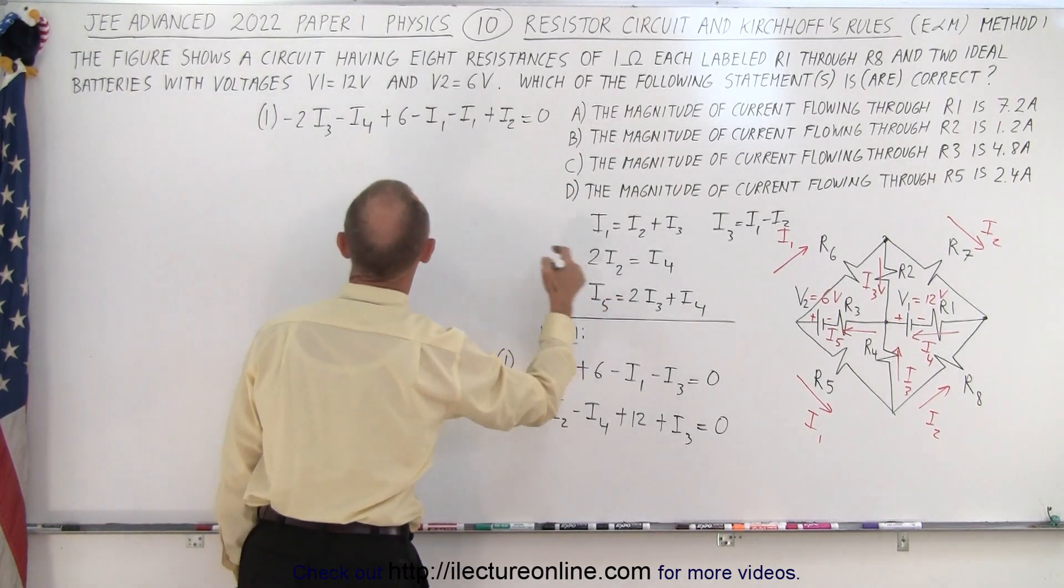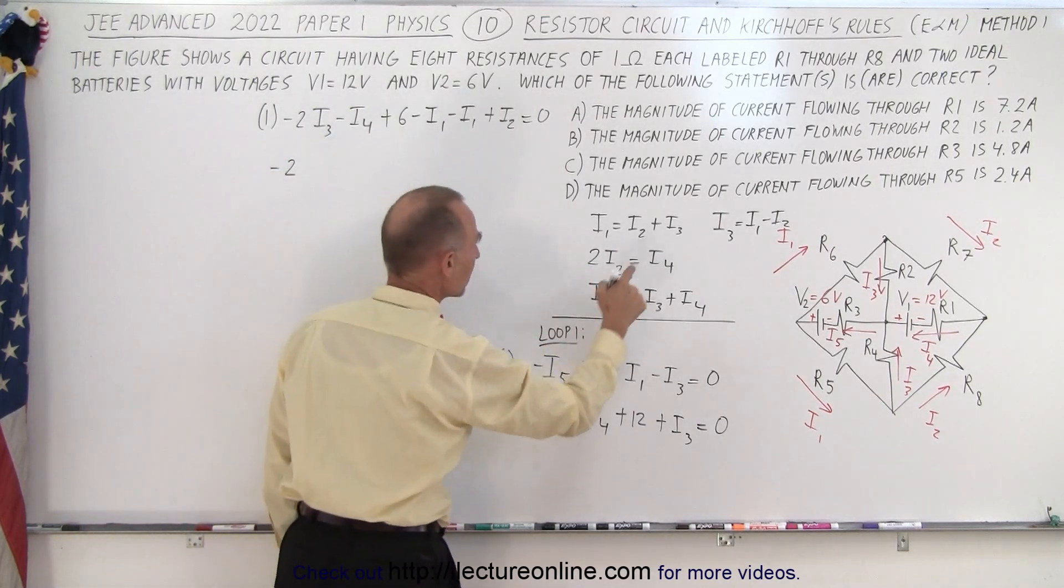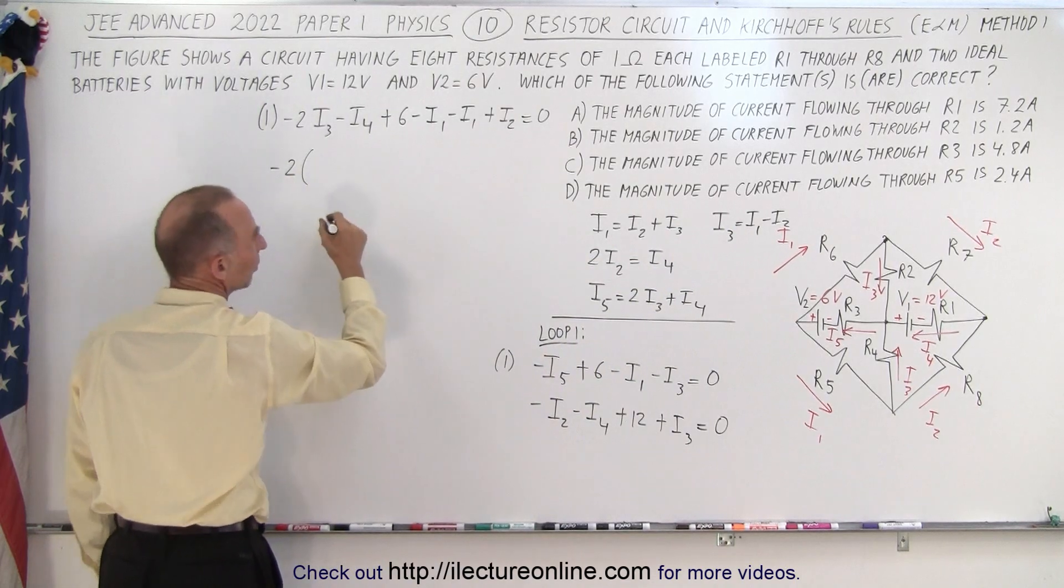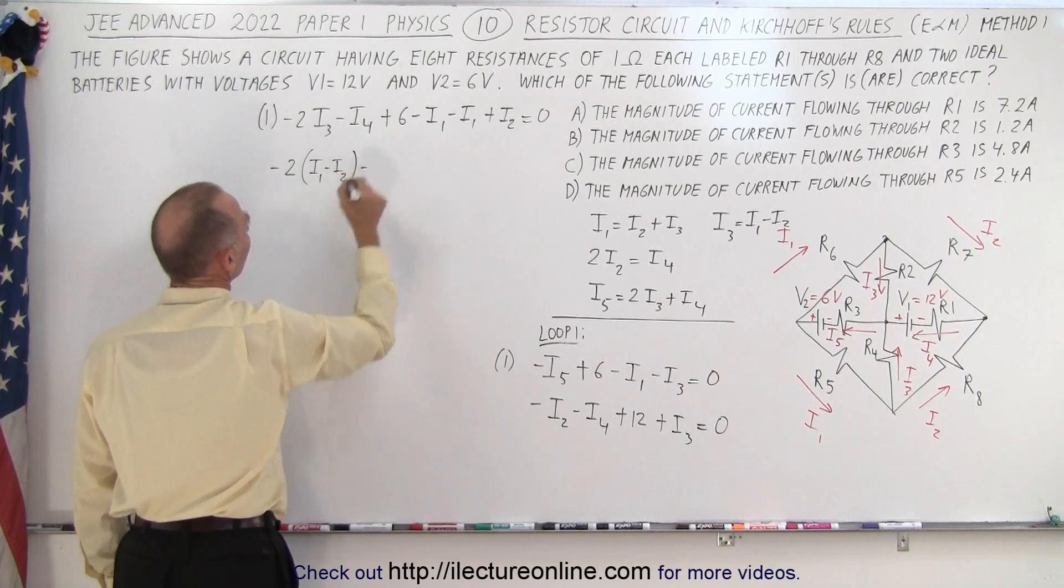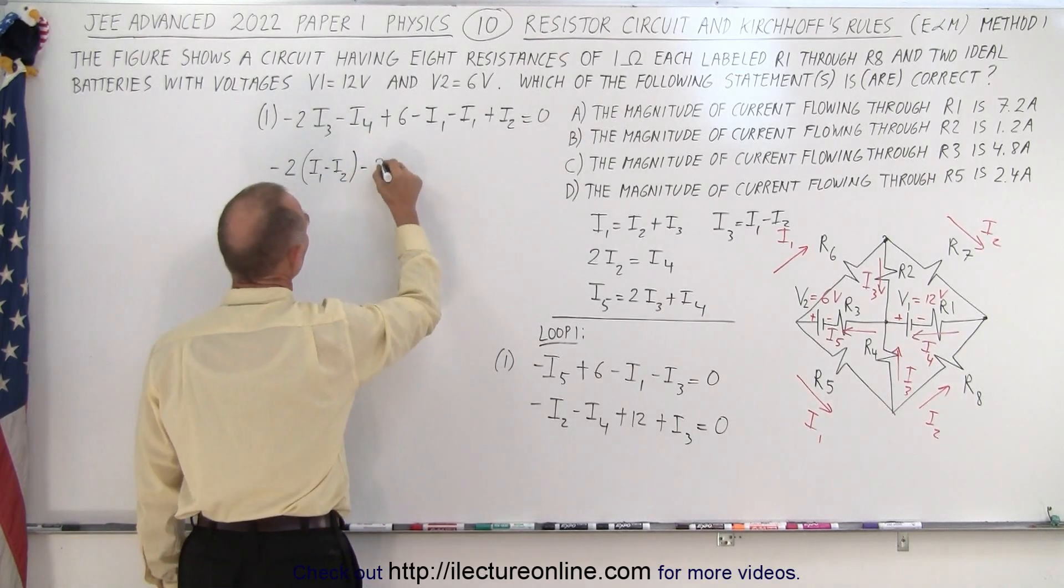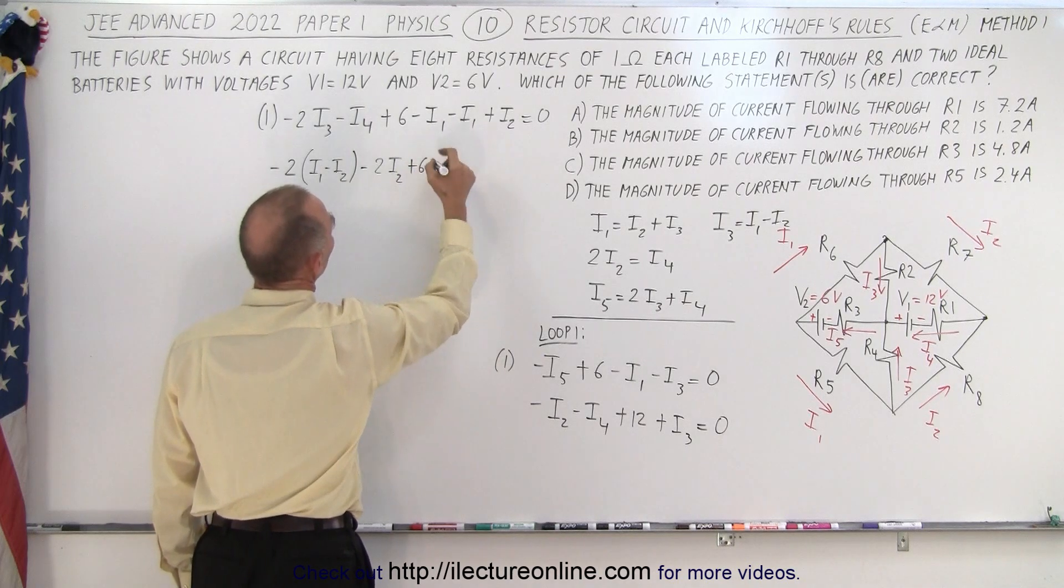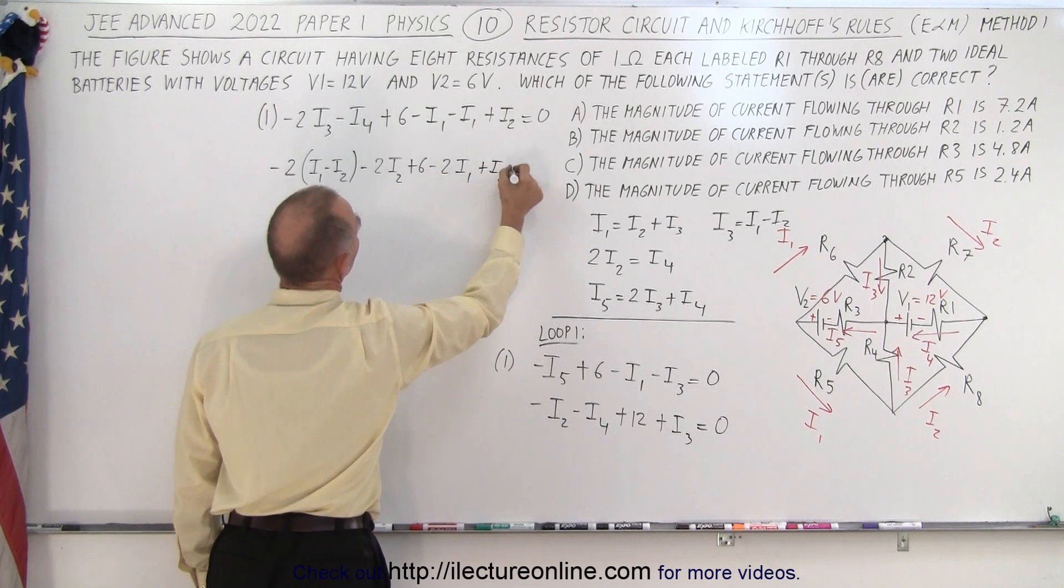I4 can be replaced by two I2s. So we have minus 2 and I3 can be replaced by I1 and I2. So we have minus 2 times I1 minus I2, minus I4, which is minus 2I2, plus 6, minus 2I1, plus I2, equals 0.